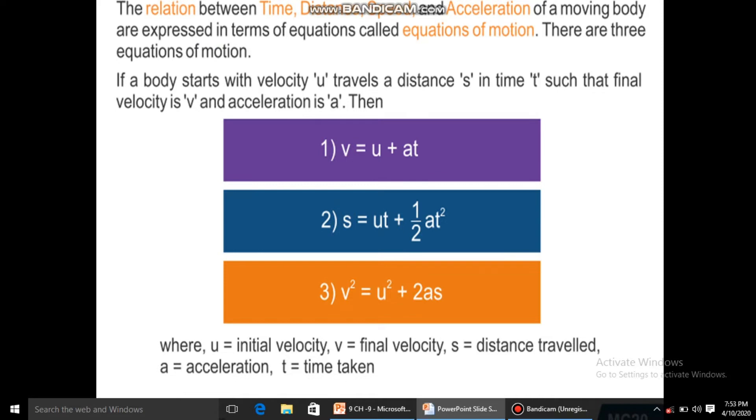The motion of an object moving at uniform acceleration can be described with the help of these three equations. These equations are very important in this chapter and show the relationship between distance, time, speed and acceleration. Where u is initial velocity, v is final velocity, s is distance and t is time. We can use these three formulas to solve our numericals.